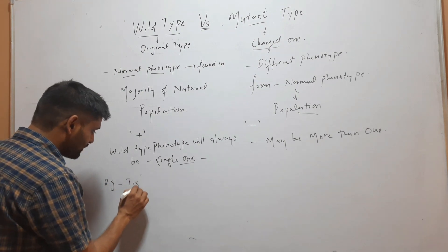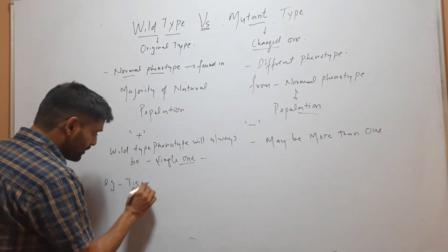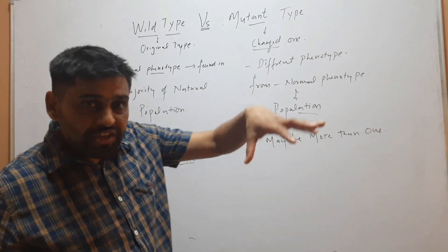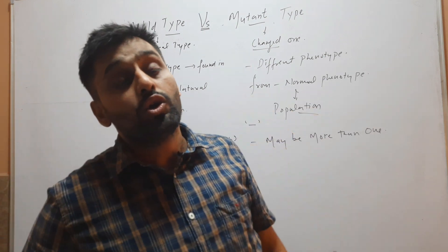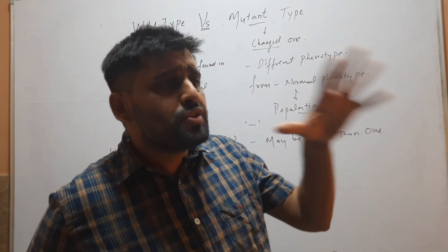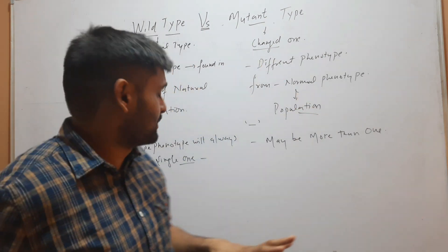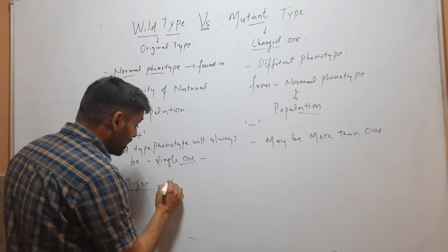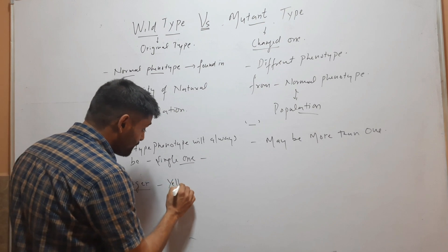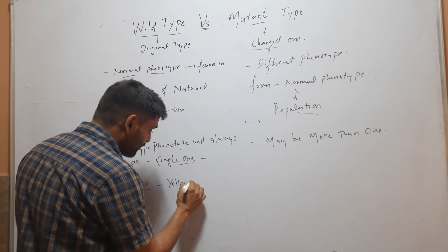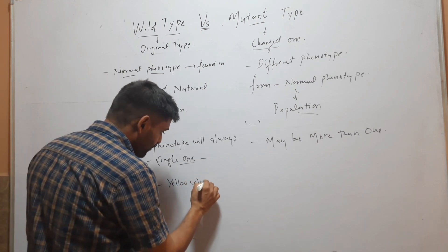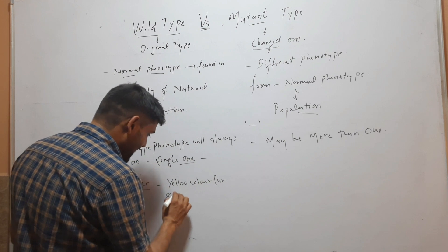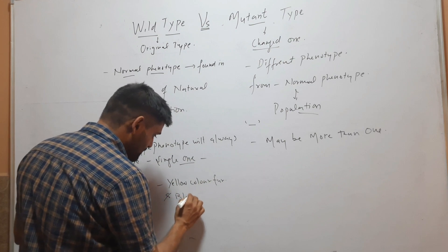For example, in tiger — you know that in a population of tiger, you will find the majority of tigers have yellow color fur and black strips.